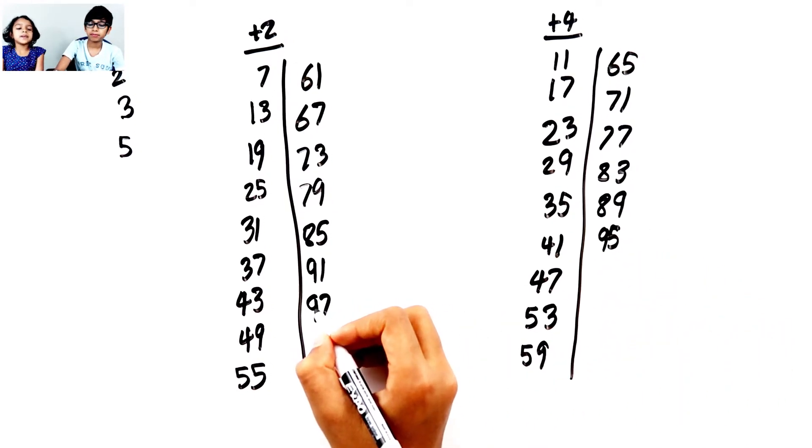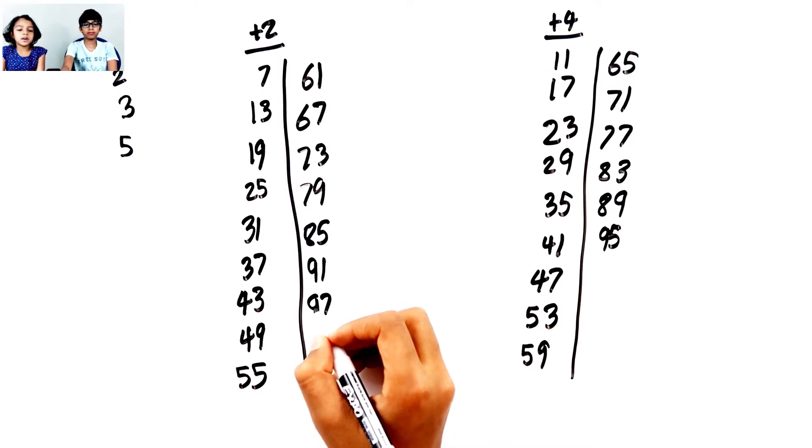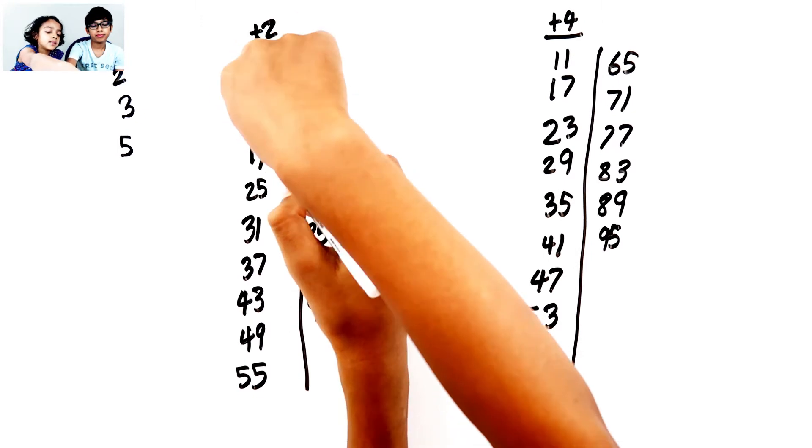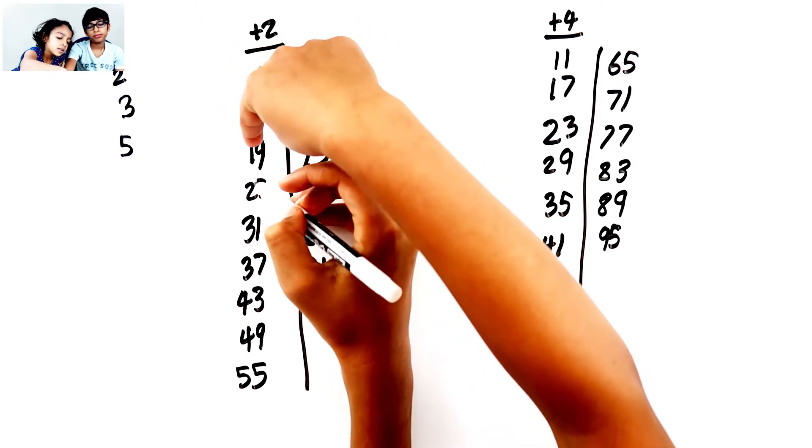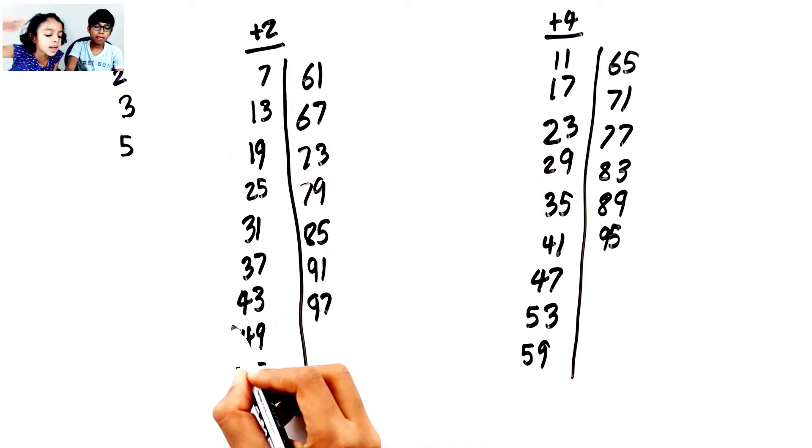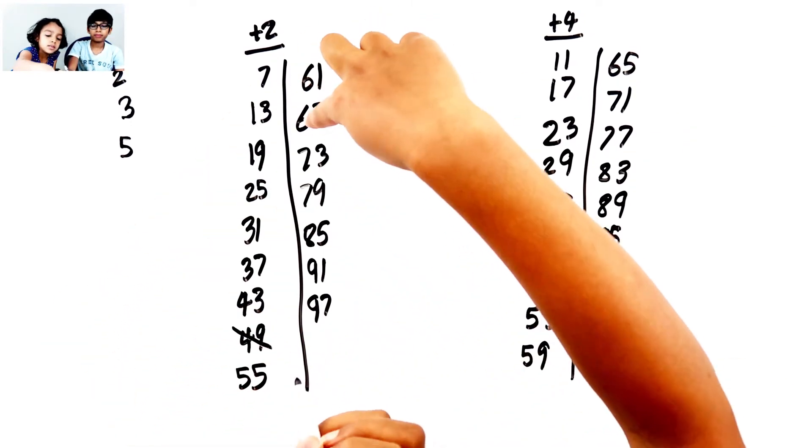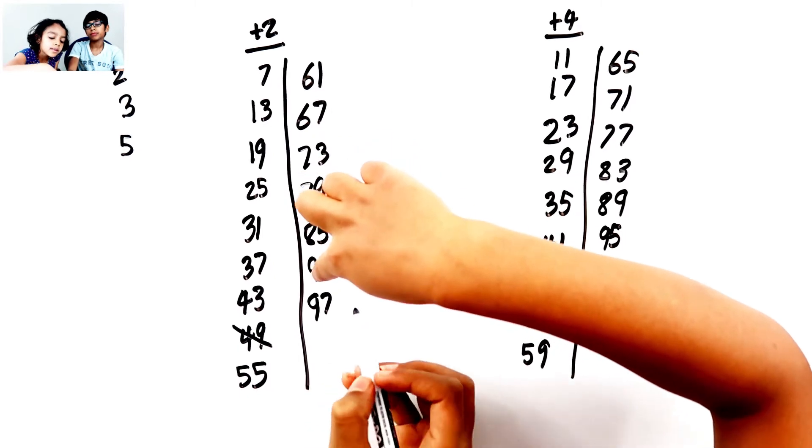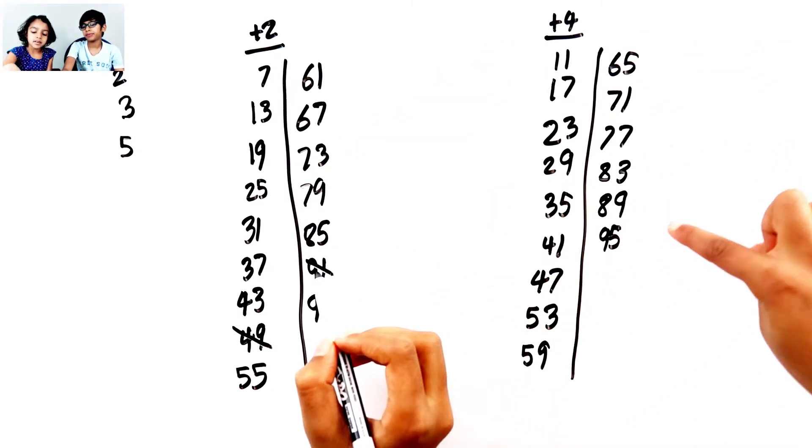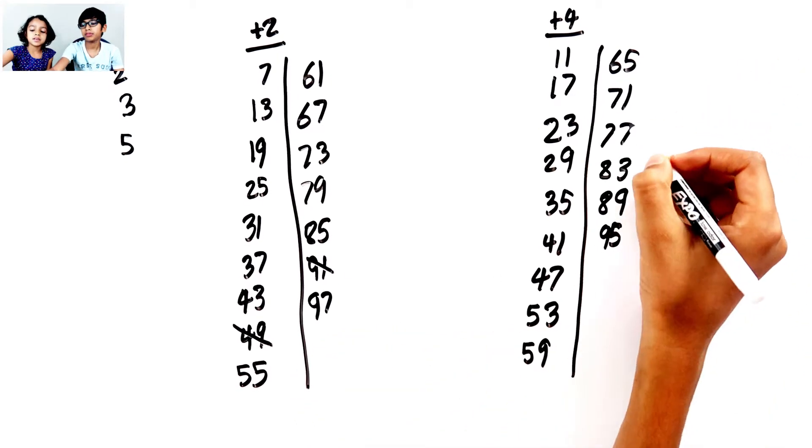We can't go more up, so we start from 7 and count 7: 1, 2, 3, 4, 5, 6, 7, cross out there. And 1, 2, 3, 4, 5, 6, 7, cross out there. And we go right to 77 and cross out there.